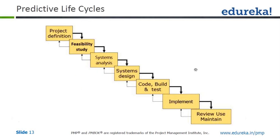This is an example of predictive life cycle, which is fully plan-driven. You have a complete plan from end to end. This life cycle is preferred when the product to be developed is well understood and there is a substantial base of industry practice. When the product is delivered in full, then it makes sense for the stakeholders involved. So essentially this is fully plan-driven.